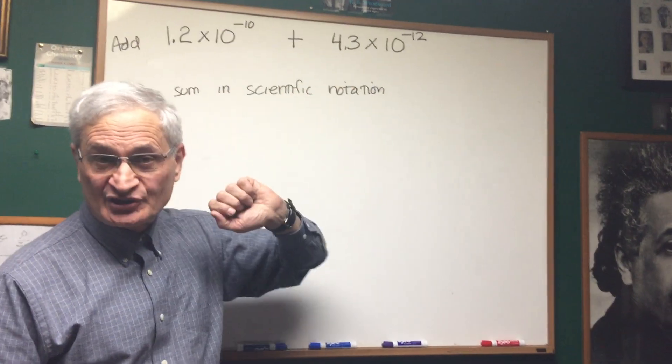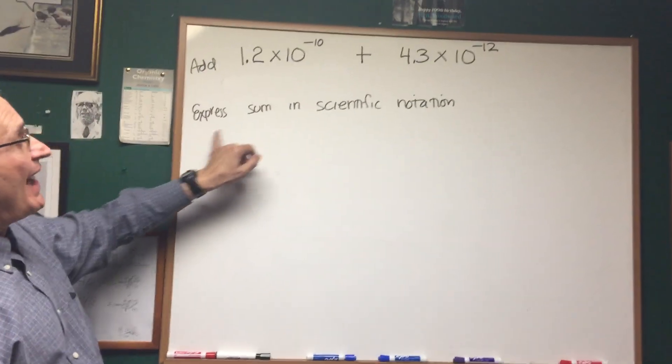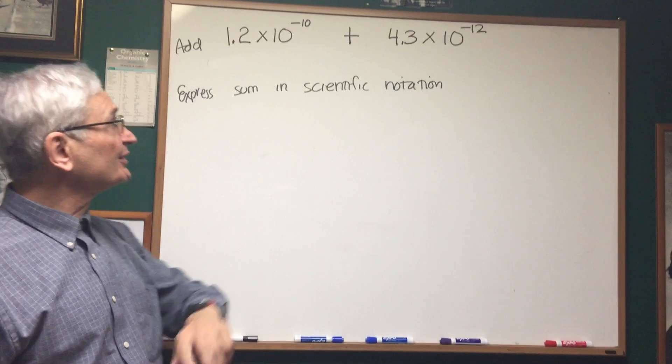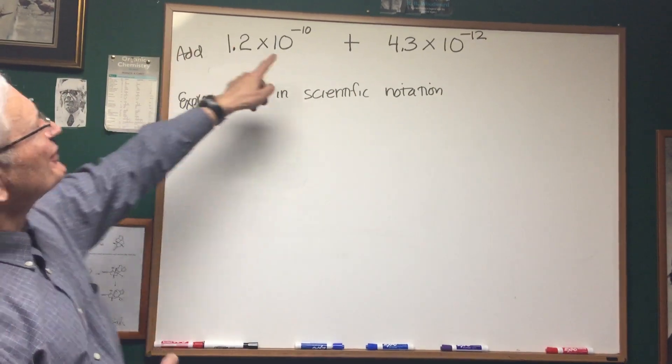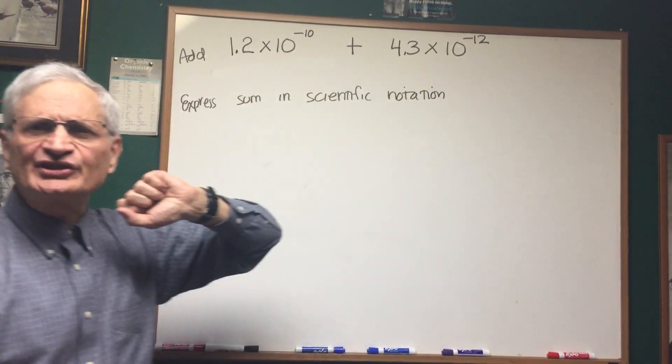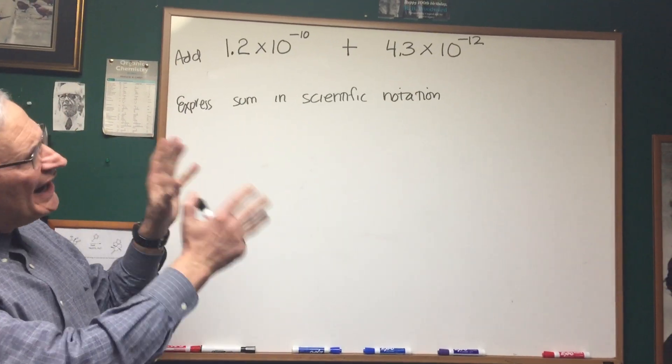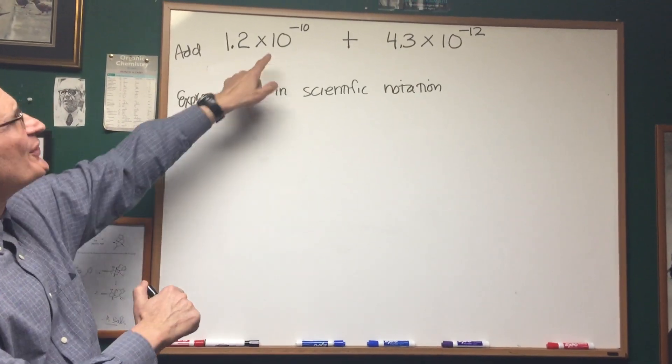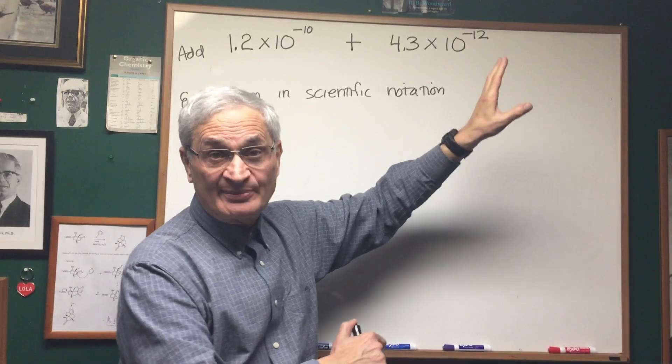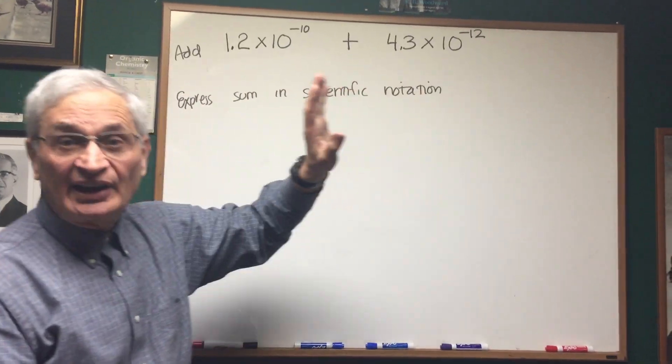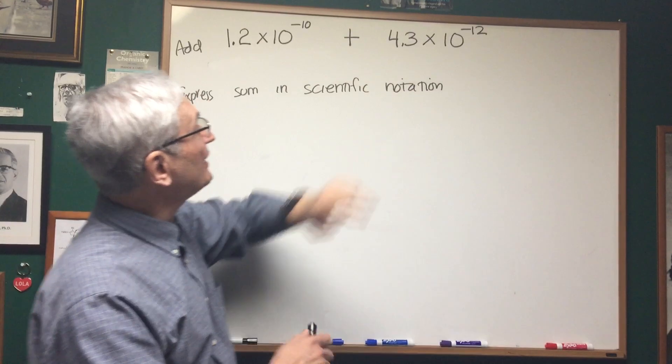We want to add these two expressions in scientific notation and express the sum in scientific notation. We look at these two values and see that the powers of 10 are different. Before we add these two together, we want to make sure that the two powers of 10 are the same, so that we have the decimal points lined up correctly in the mantissa portion of the expression.